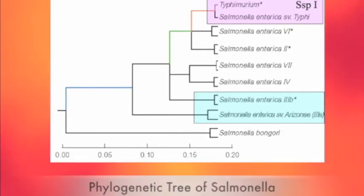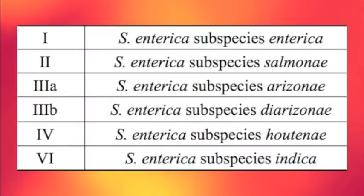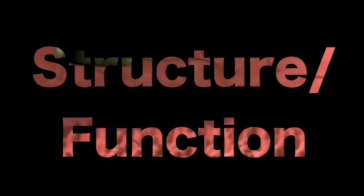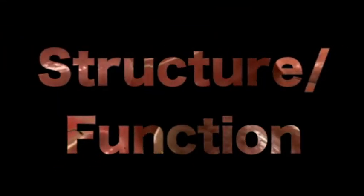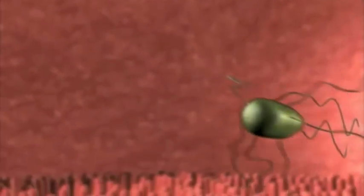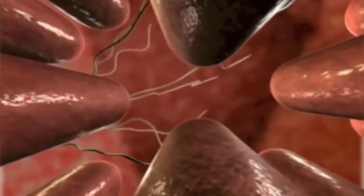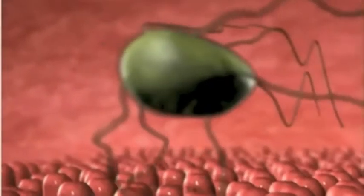S. enterica contains six subspecies. There have been identified over 2,300 types of salmonella serotype bacteria, but subspecies 1 of S. enterica is the majority of being pathogenic for humans. Salmonella is a rod-shaped, gram-negative, non-spore-forming anaerobic bacillus that is measured 2 to 3 μm by length and 0.7 to 1.5 μm by diameter.